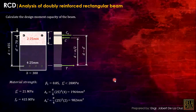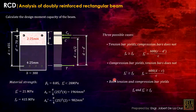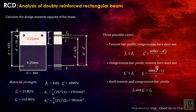This distance is D minus D', and this one is D minus a/2. Now let me present the three possible cases in doubly reinforced beams. Case 1: tension bar yields, compression bar does not yield — Fs exceeds Fy but Fs' does not exceed Fy. Case 2: compression bar yields, Fs' exceeds Fy, but the tension bar does not yield — we use the strain-based formula for Fs. Case 3: both tension bar and compression bar yield.